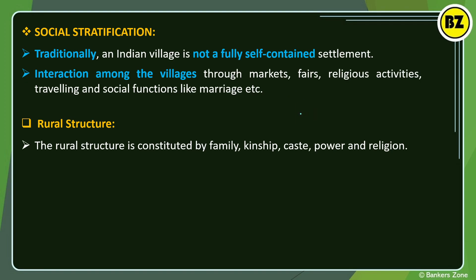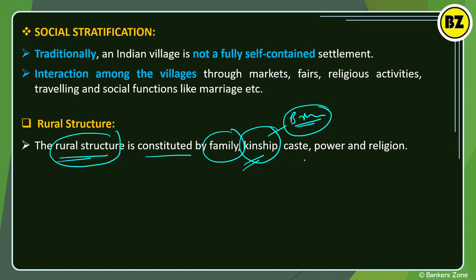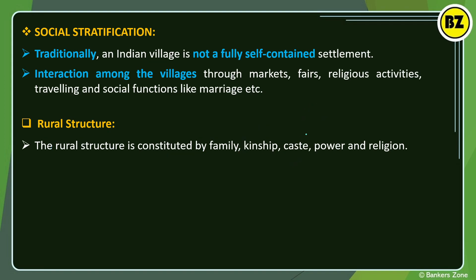Rural structure is constituted by family, kinship, caste, power, and religion. Kinship means brotherhood — even without blood relations, people are cooperative toward each other. People of the same caste help each other. Power and religion are also important factors forming rural society.